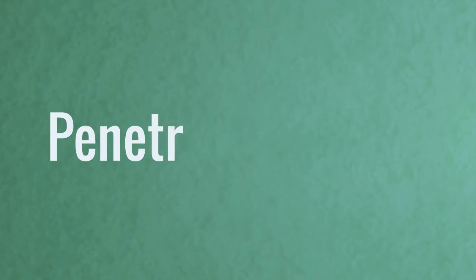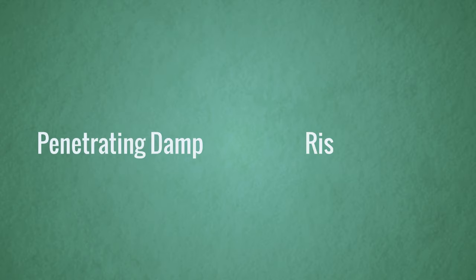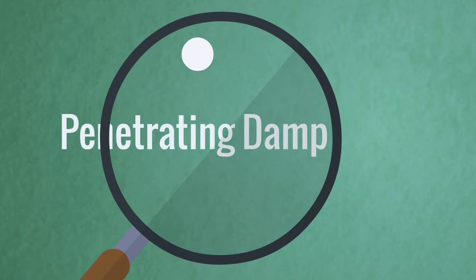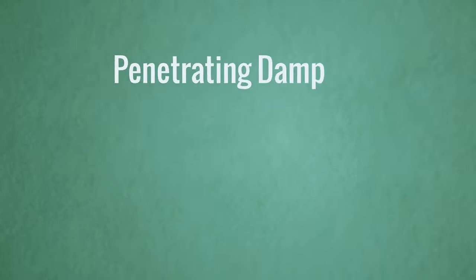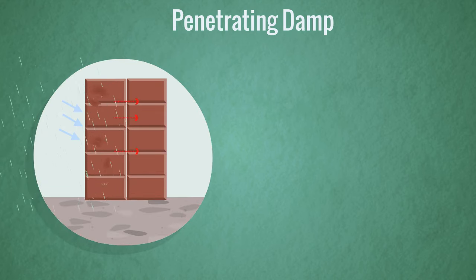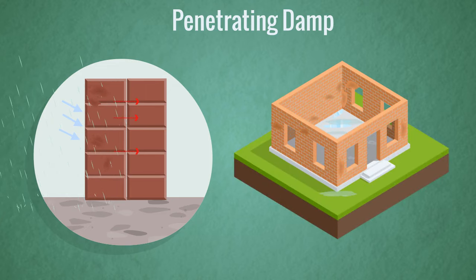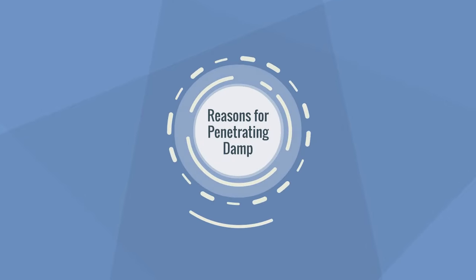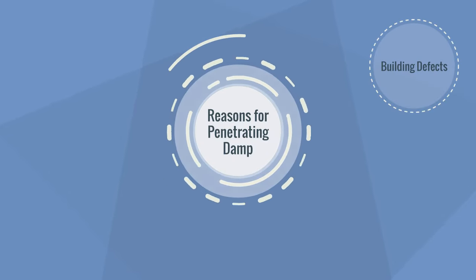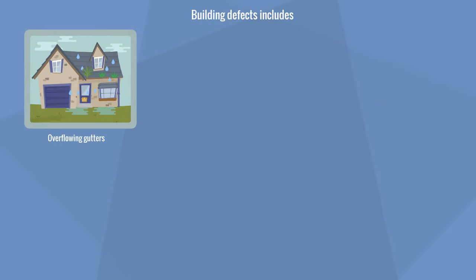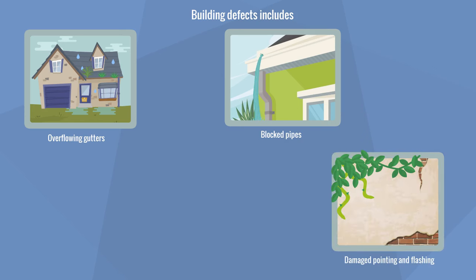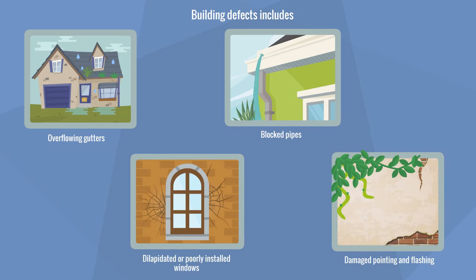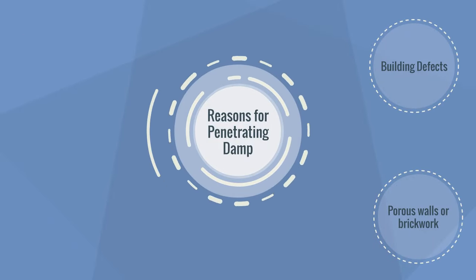What causes penetrating damp? To understand the differences between penetrating and rising damp, we need to first understand the causes behind each. Penetrating damp is the result of water ingress from the outside of the building through an external wall and into the property. There are a number of reasons for this, including building defects, overflowing gutters, leaking or blocked pipes, damaged pointing and flashing, dilapidated or poorly installed windows, and porous walls or brickwork.